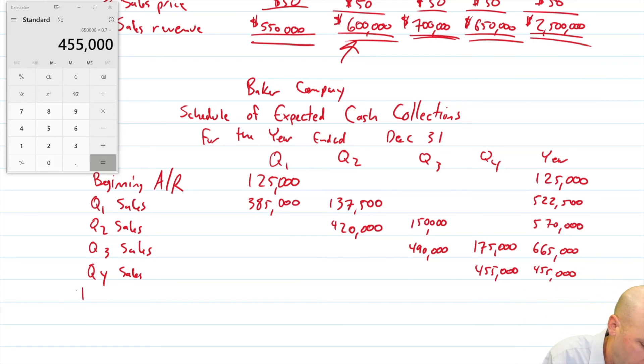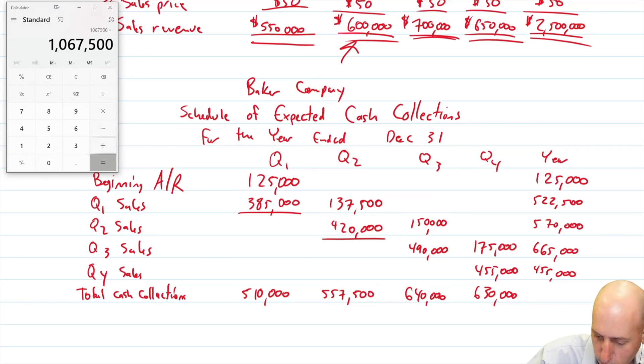So now we just need totals, total cash collections. In quarter one, we collect 125 plus 385. We collect $510,000. We're collecting some money from before and some money from this quarter. Same thing in quarter two, 137 plus 420 is 557,500. That's how much money is coming in the door in quarter two. In quarter three, 150 plus 490 is 640. In quarter four, 175 plus 455 is 630. If we total us all up, we can either total down the side or across the bottom. 510 plus 557,500 plus 640 plus 630 gives us 2,337,500.